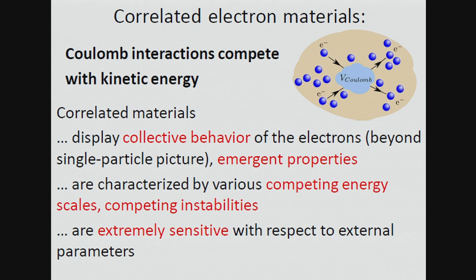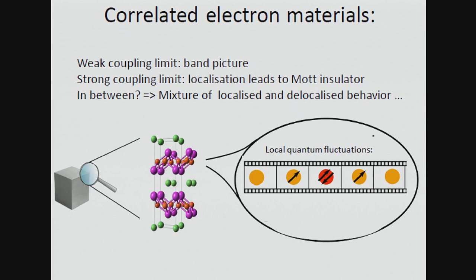We are talking about localized electrons. You should think of these solids rather as collections of atoms where the electron behaves like in an atom and does not spread out like in Bloch theory over the whole crystal. So if we look at the two limits: the strong coupling limit — Mott insulator — and the weak coupling limit — band picture.